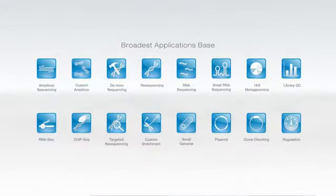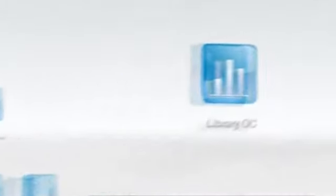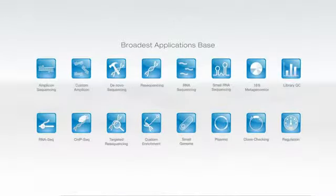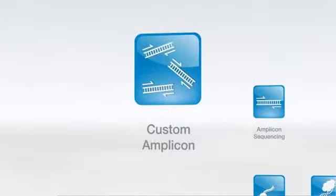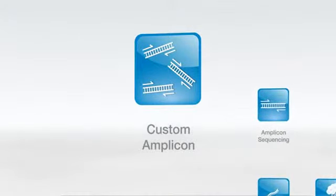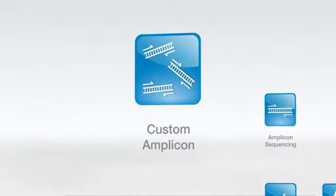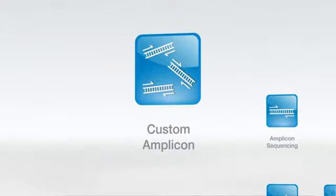In addition, we think the system will be used a lot for library QC and assay development. The TruSeq custom amplicon application will enable researchers to follow up on cancer genome studies, where they can target up to 384 different genes and study 96 samples at a time and validate results they might have seen at the whole genome level across many more samples.